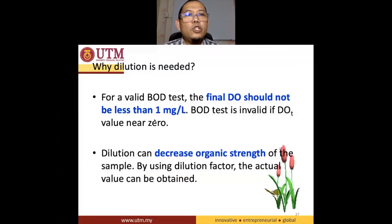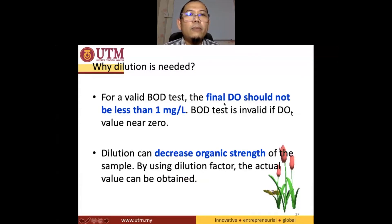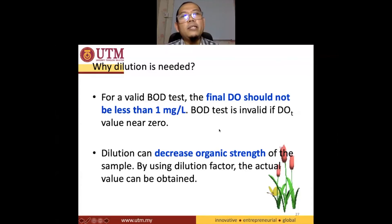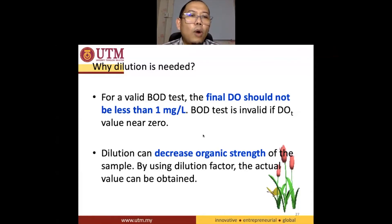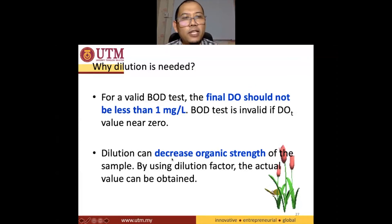If you have dilution — this is why it says — your final DO should not be less than 1 mg/L. If it is less than 1 mg/L, the sample needs to be diluted. Why do we need to do dilution? Because it decreases the organic strength of the sample — that is the purpose of dilution.